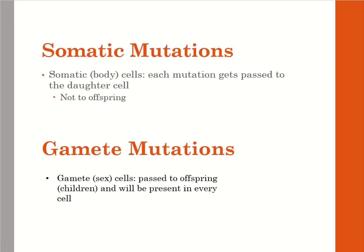Somatic mutations are where the body cells have a mutation, and it gets passed down to the daughter cell but not to offspring. If a cell has a mutation, that mutation can get passed on to a daughter cell after replication and cell division — so the daughter cells inherit the mutation from the parent cell.